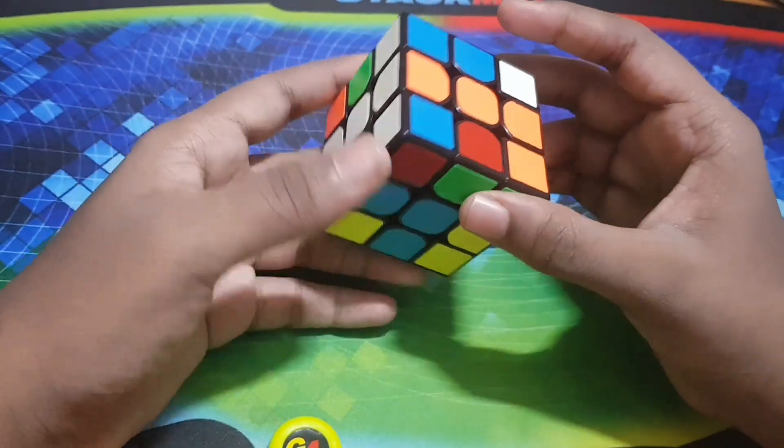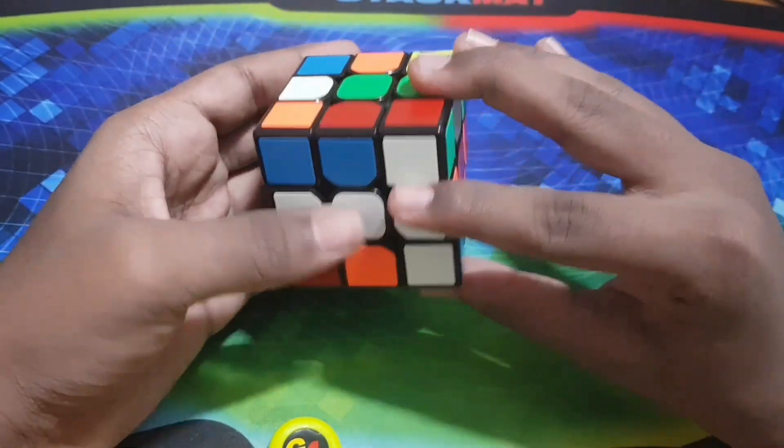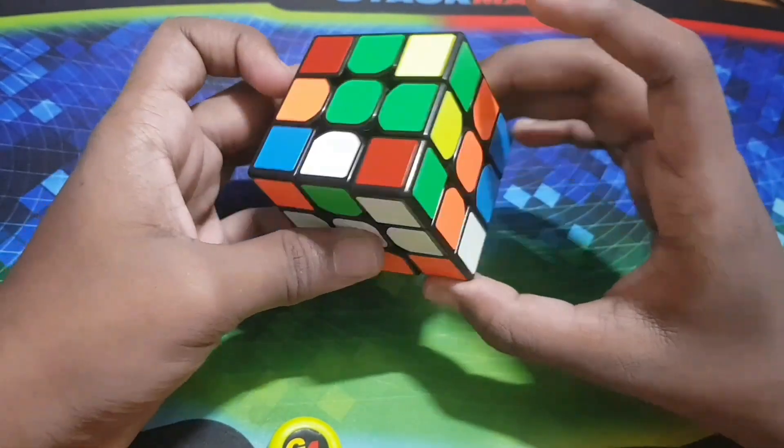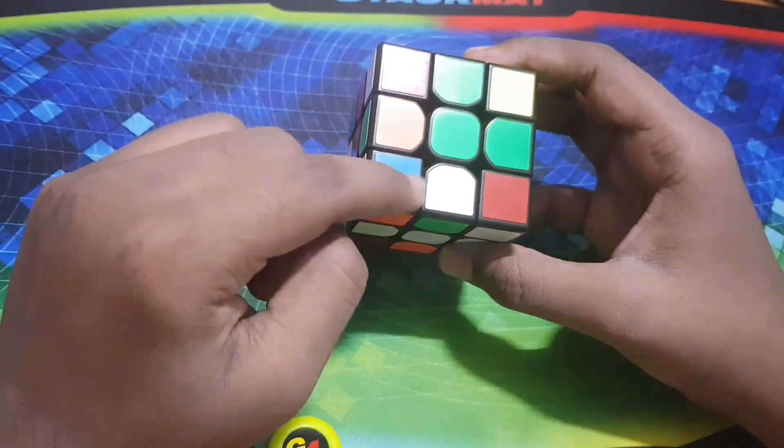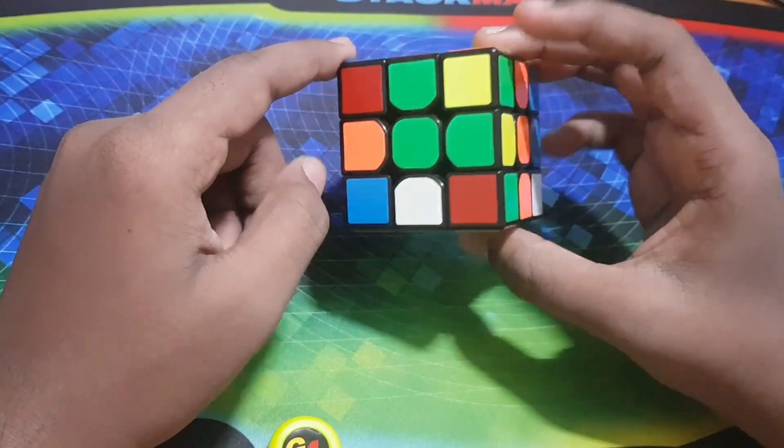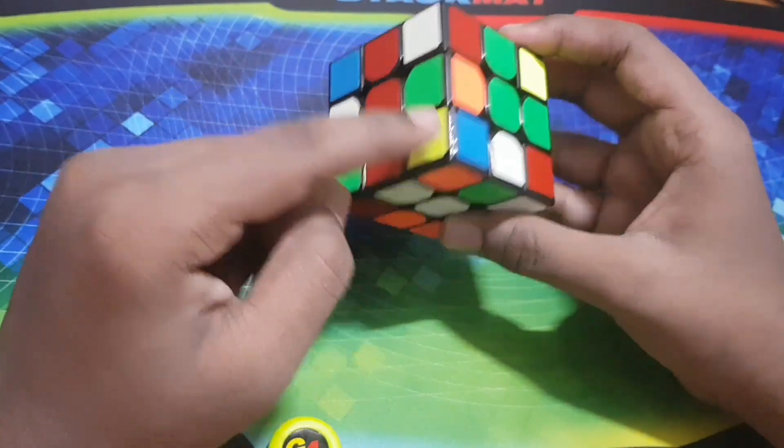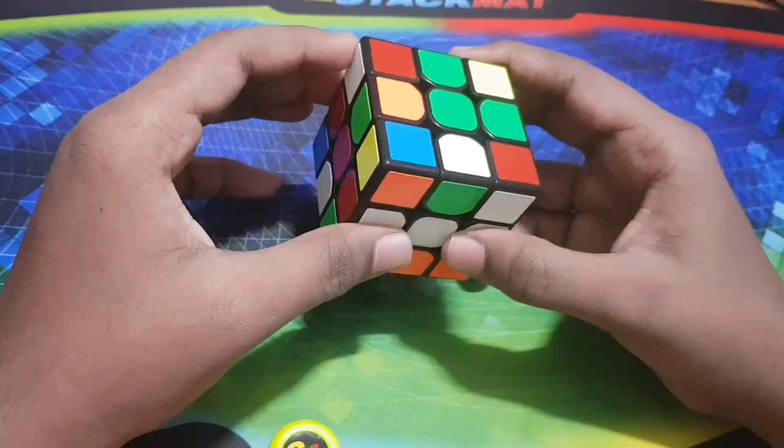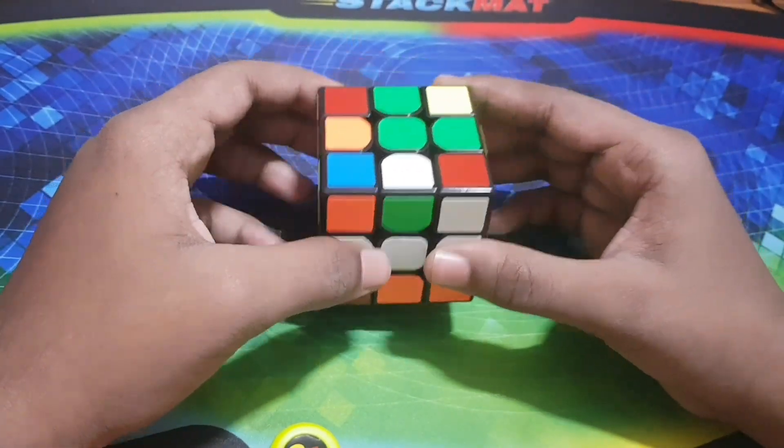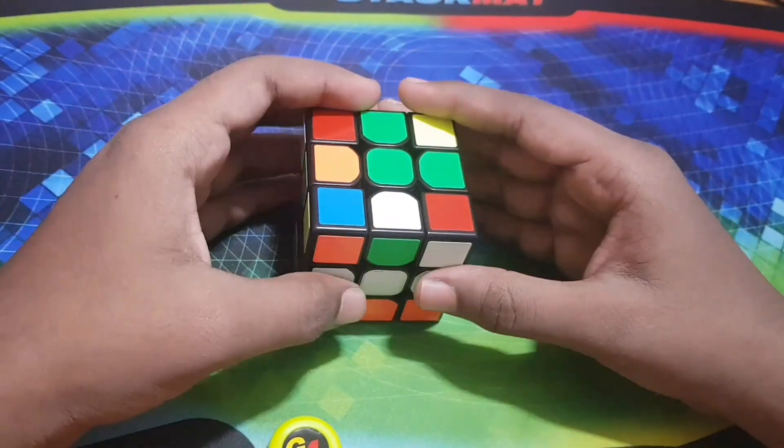You see that these blue corners are still on the top face, so let's bring these both corners to the bottom. We can use the blindfolded method for this. What I use is the Y-perm. It's not like a blindfold method, it's just a Y-perm with the F and F prime going up.